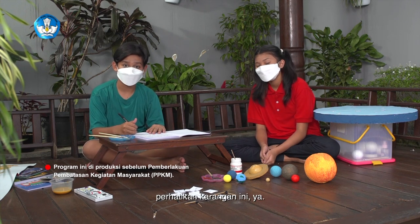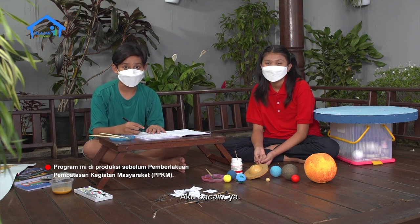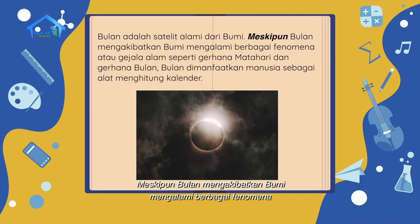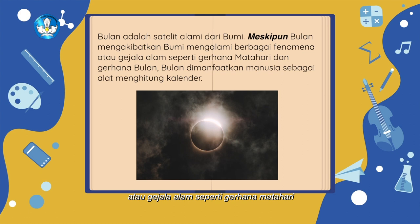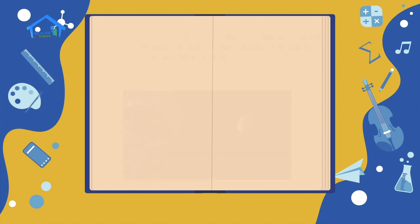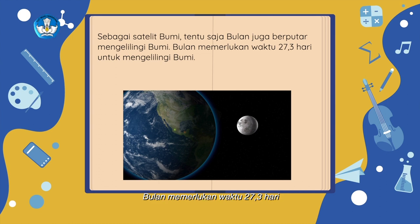Perhatikan karangan ini ya. Di dalam kalimat ini aku sudah memasukkan beberapa kalimat majemuk setara berlawanan. Aku bacain ya. 'Bulan adalah satelit alami dari bumi. Meskipun bulan mengakibatkan bumi mengalami berbagai fenomena atau gejala alam seperti gerhana matahari dan gerhana bulan, bulan dimanfaatkan manusia sebagai alat penghitung kalender. Sebagai satelit bumi, tentu saja bulan juga berputar mengelilingi bumi. Bulan memerlukan waktu 27,3 hari untuk mengelilingi bumi.'